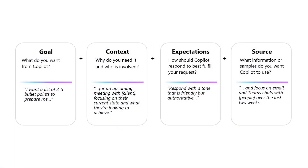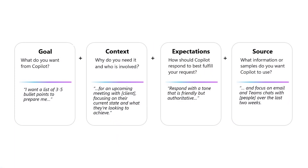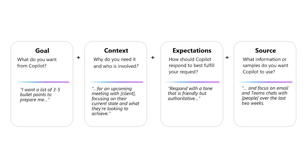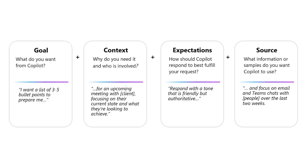Let's put it all together. Our prompt is: I want a list of three to five bullet points to prepare me for an upcoming meeting with John Doe, focusing on their current state and what they're looking to achieve. Respond with a tone that is friendly but authoritative, and focus on email and Teams chats with John Doe over the last month. This prompt will give us a clear and concise answer now that we've utilized all necessary steps to build a strong prompt.